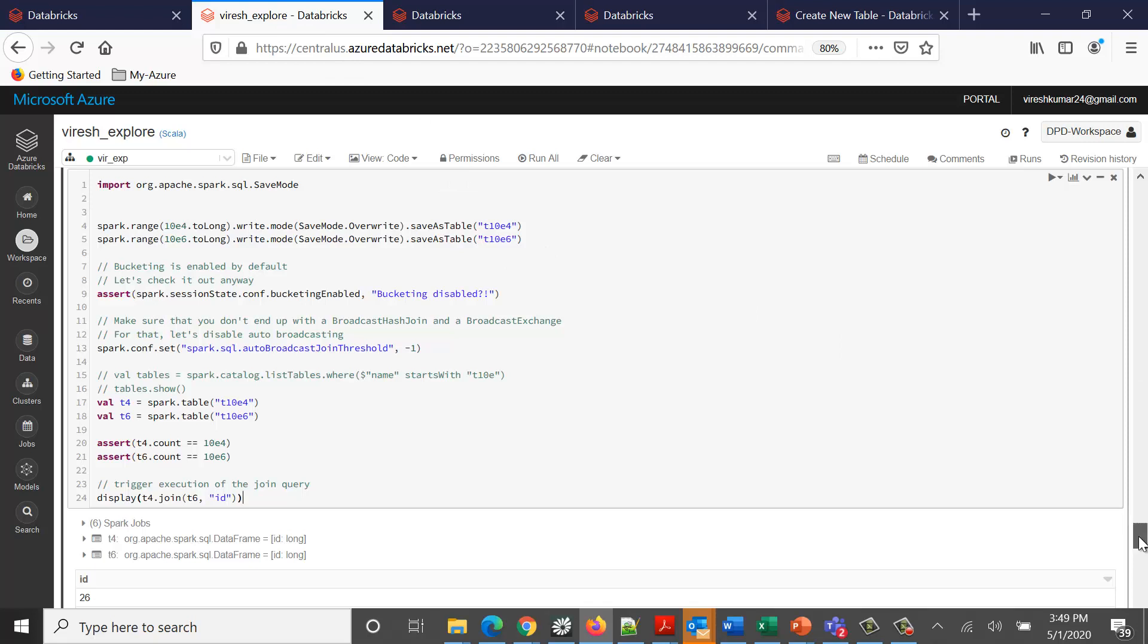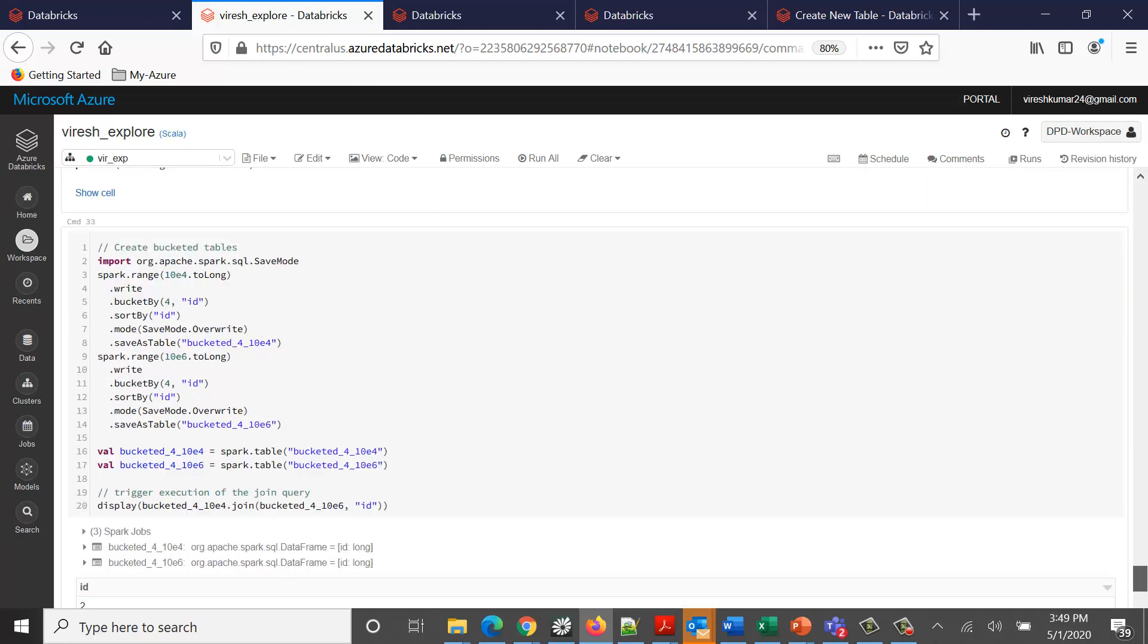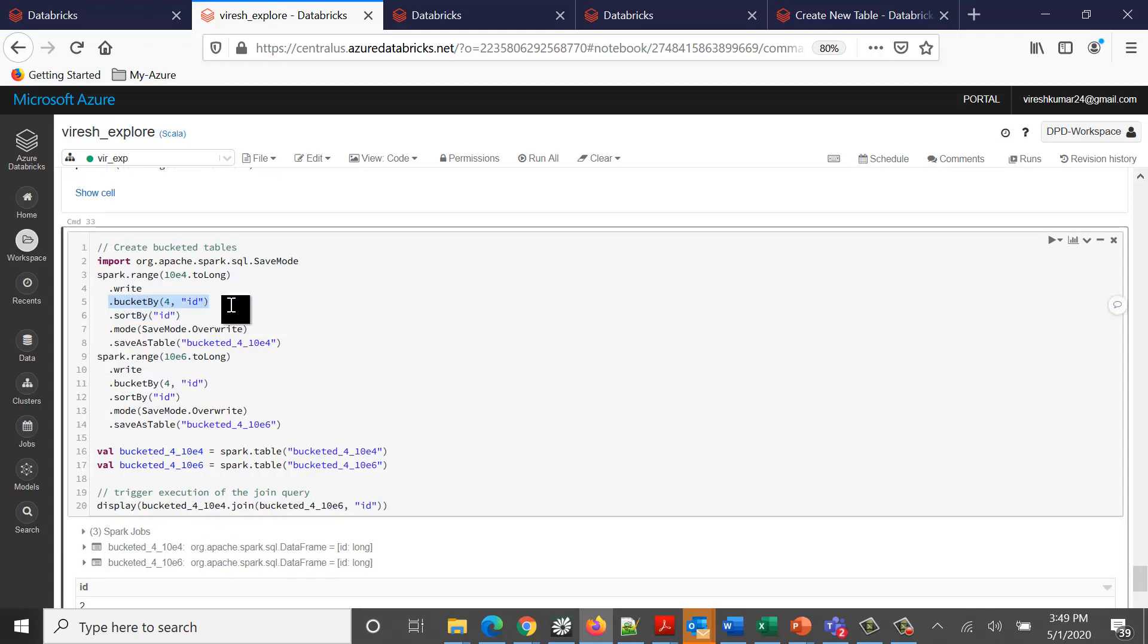Now the same kind of join, the same data, let's try to apply the concept of bucketing. Same data, but this time we have tried to create buckets of four on the column IDs and then we did the sort on the same and saved this as bucketed tables. See this syntax, this is how you can create the buckets for the dataframes when you're trying to write it to a bucket.